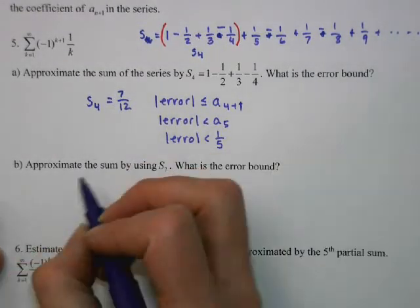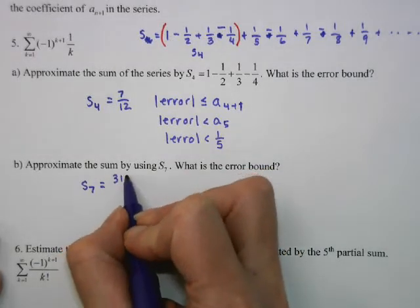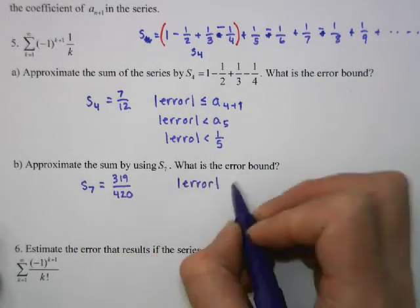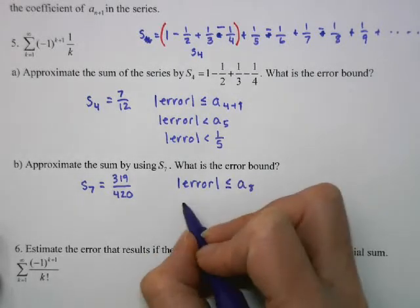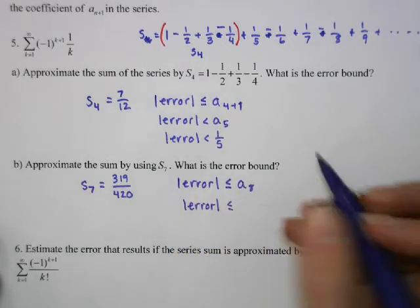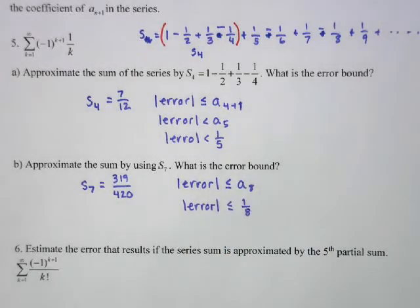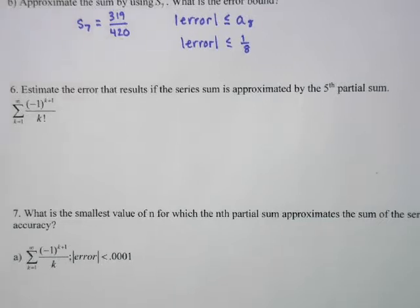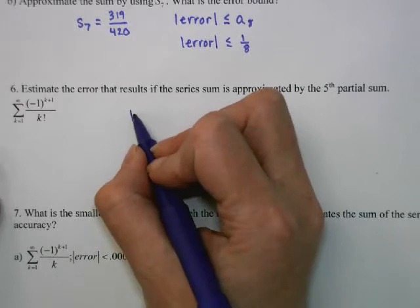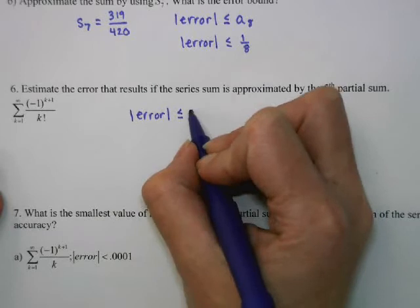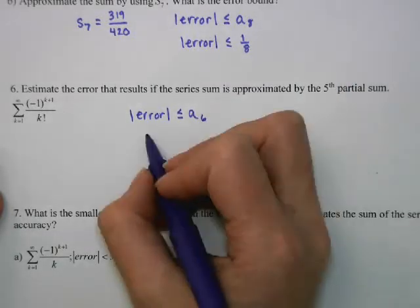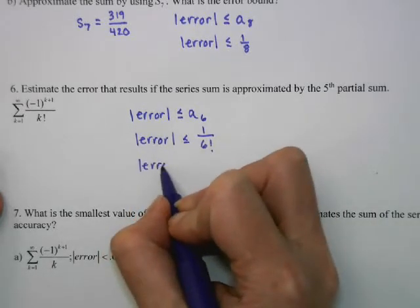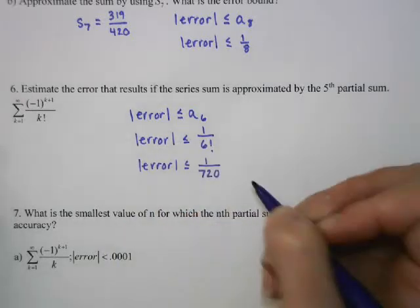What if we added 7 terms? S₇ = 319/420. The error is going to be less than or equal to A₈, so the error is less than 1/8 — we'll get within 1/8 of the actual sum. Another example: if the series sum is approximated by the fifth partial sum, the error will be less than or equal to A₆, so the error is less than or equal to 1/6! = 1/720.